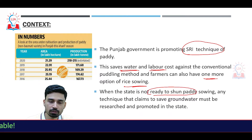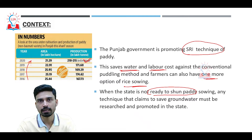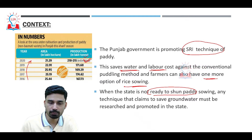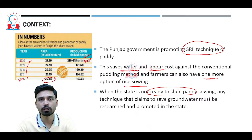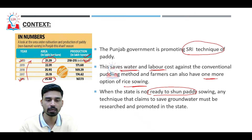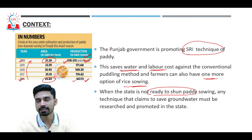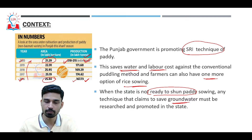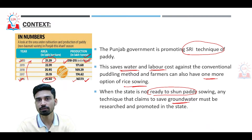Punjab is one of the highest producers of rice in India. The area under cultivation has continuously decreased, but production in lakh tons has continuously increased. Comparing 2016 to 2020, the area under paddy cultivation shrank from 25.44 lakh hectares to just 21.29 lakh hectares, while rice produced increased from 1,768 to about 210–215 lakh tons. Punjab also faces continuous over-exploitation and significant decline in groundwater levels.